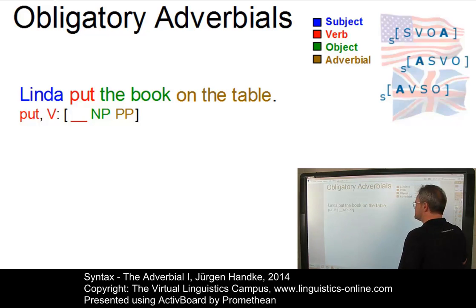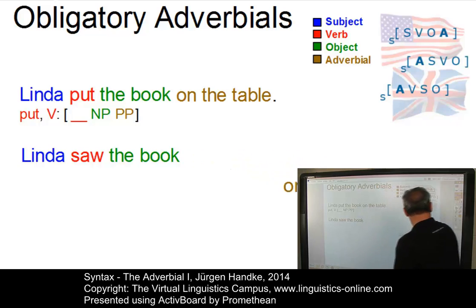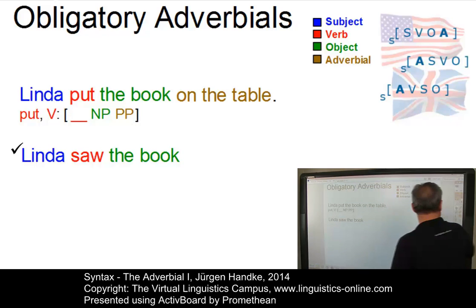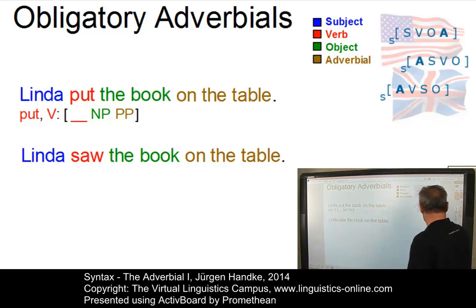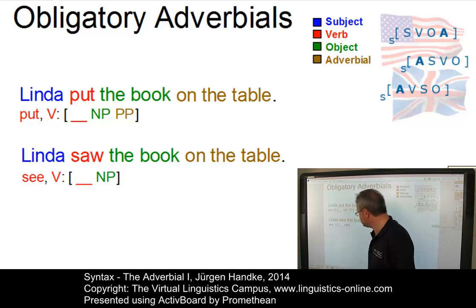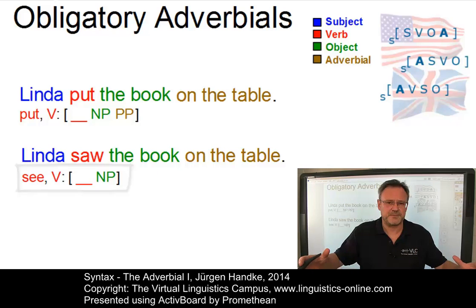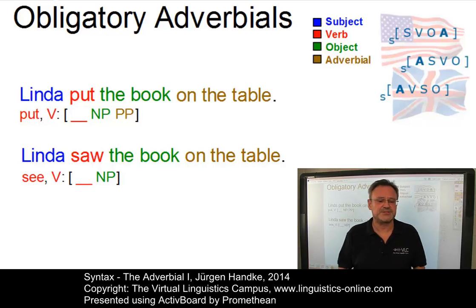Let's compare that with a sentence that contains the verb 'see': 'Linda saw the book on the table.' Again we have the adverbial 'on the table', so let's remove it. The result, however, is a grammatical sentence: 'Linda saw the book.' If we check the sub-categorization frame associated with 'see', we notice that it only requires a noun phrase as its local complementation structure. So, despite the fact that 'put' and 'see' have the same phrase structure, the status of the adverbials within the respective sentences is different — obligatory for 'put' and optional for 'see'.